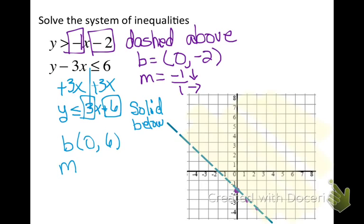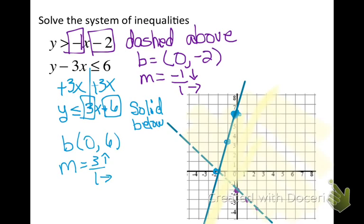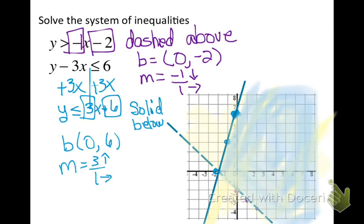My slope is 3 over 1, which means go up 3 to the right 1. I go to 6, make a point, and since I can't go up 3 to the right 1 easily, I go down 3 to the left 1. I draw this as a solid line and shade below the y-intercept. The area where my two shaded regions cross is the solution region — I'll mark it in blue. Any point within that blue shaded area is a solution to this system.